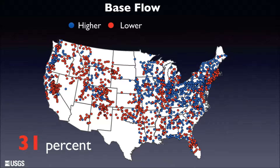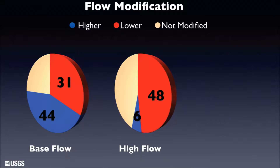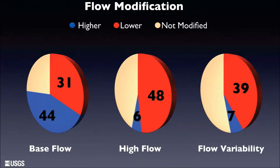In addition to base flow, we found that high flows in streams were less than natural at about half the streams we assessed, and the variability of stream flow was less than natural at about 40% of the streams we assessed. Essentially, we've taken the natural ebbs and flows and made the flows relatively constant.